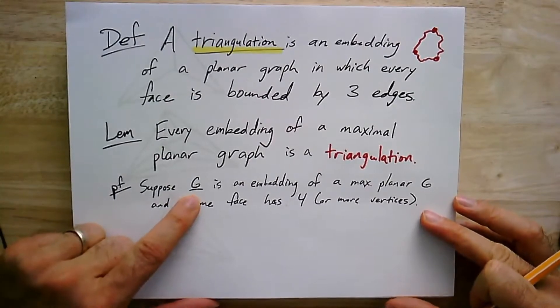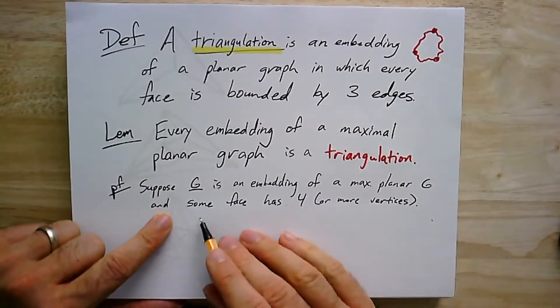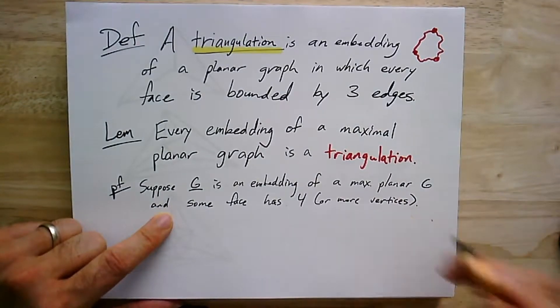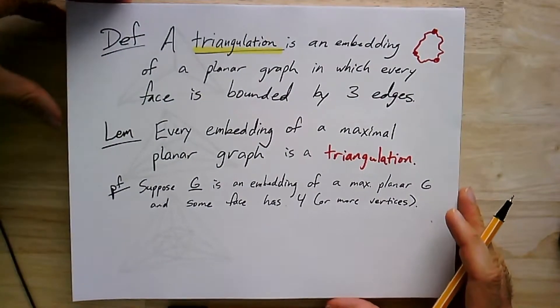I'm going to need a finer pen to fit this proof into this small space here. The idea is, suppose you had some embedding of some maximal planar graph, and some face of that graph had four or more vertices. That is, some face is not a triangle.